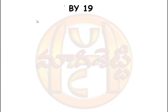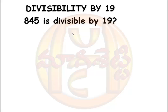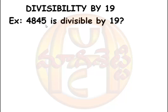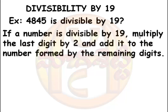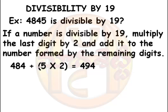Now see another criteria. If we take a number 4845, we check whether it is divisible by 19 or not. The rule is: multiply the last digit by 2 and add it to the number formed by the remaining digits. Here the last digit is 5. Multiplying 5 by 2 gives 10; by excluding the last digit the remaining number is 484. Adding 484 and 10 we get 494.